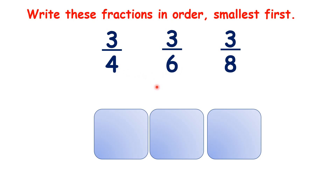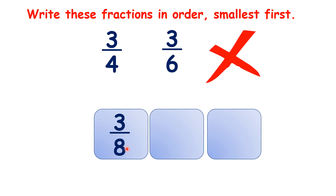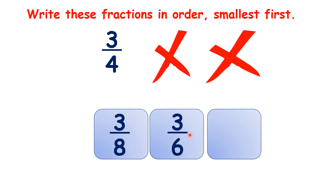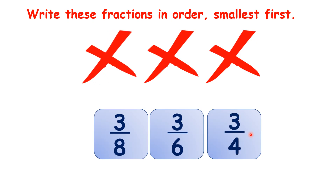So which is our smallest fraction? It's the fraction with the largest denominator, so three-eighths. What do we have next? We have three-sixths, and that means our largest fraction is three-quarters. Again, it will help us to see the fractions.